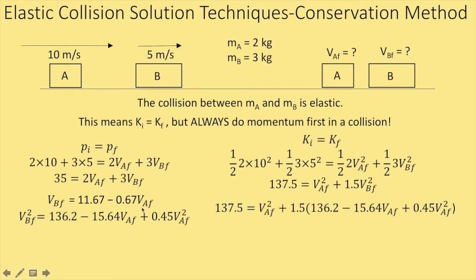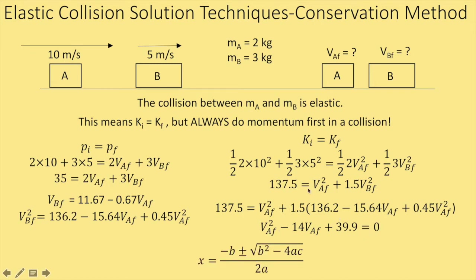After substituting, it gets a little complicated but not too bad if you're careful and have a lot of paper ready. I multiply everything by 1.5, and you can see there are some V_B final squared terms to add together, some constant terms to combine, and a term with just V_B final. After working that out — the algebra I'm not doing here, you should show it on your own — I get a quadratic. Using the quadratic formula to solve for V_B final gives two answers, and both look reasonable.